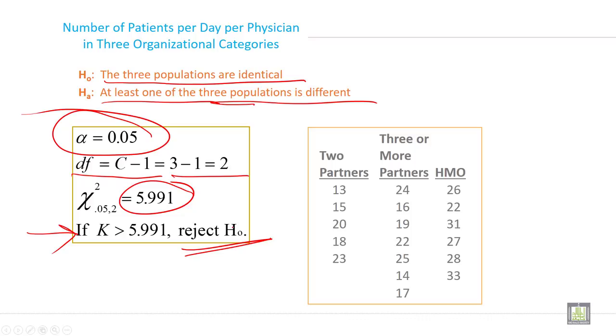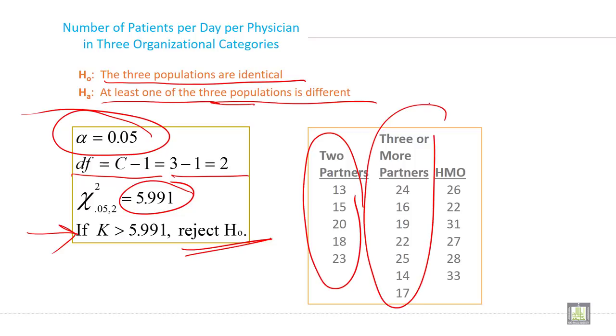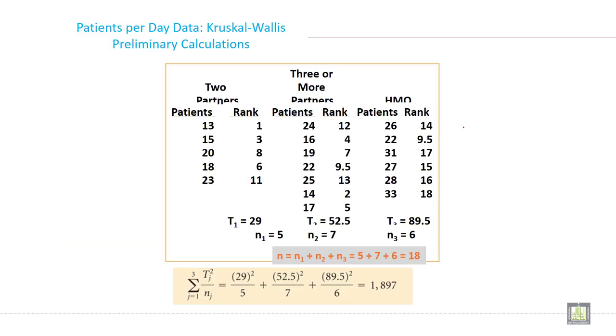If K is greater than 5.991, reject the null hypothesis. These are the data given for all three groups. Here is the calculation for the two-partner group, three-partner group, and HMO group.